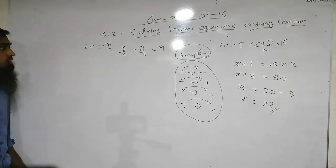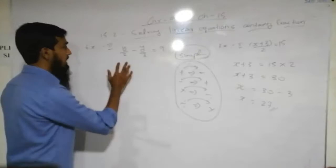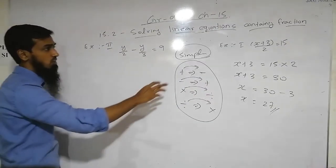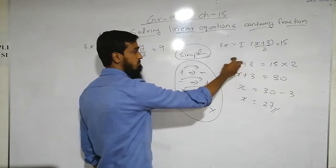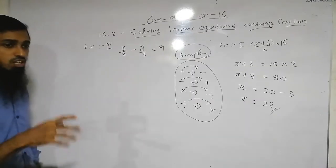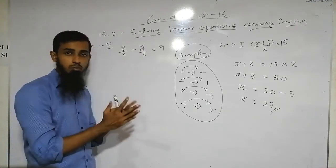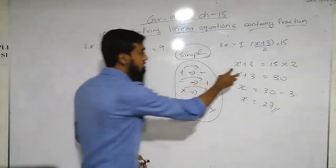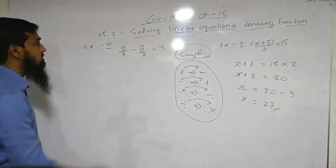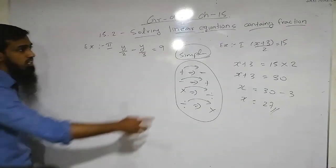The second example is: y/2 − y/3 = 9. This is different from the first example because the unknown term y appears in two positions. We cannot find the unknown term with two separate positions — we have to bring it into one. We need to find a common denominator for 2 and 3.